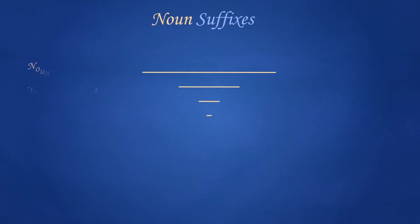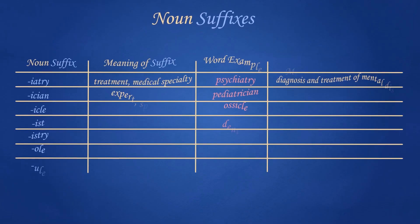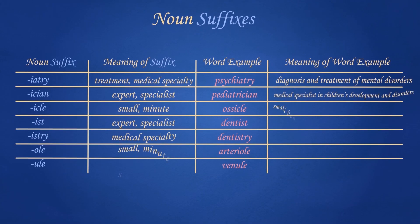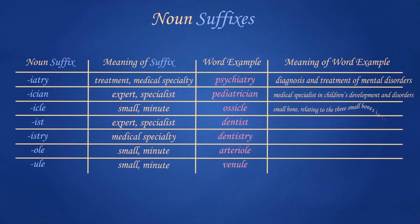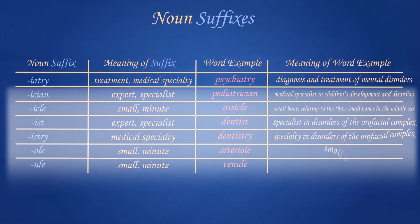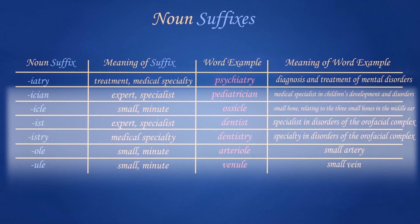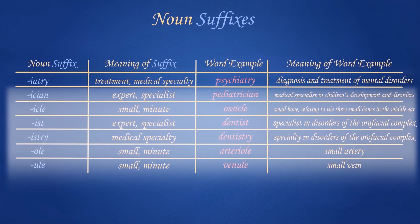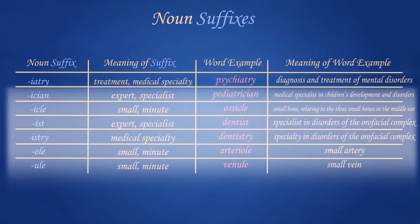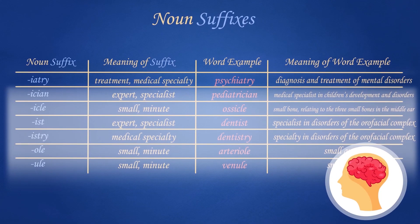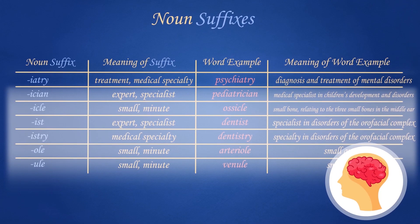Several suffixes do not fall under any of the earlier classifications, but maintain the root or combining form as a noun. These are noun suffixes — like the suffix '-iatry', which means 'treatment or medical specialty', as in the term 'psychiatry', which means 'diagnosis and treatment of mental disorders'.